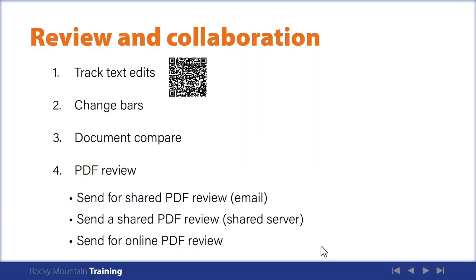Next up is a quick look at Document Compare. FrameMaker can compare two versions of a document to show you what has changed — not just text changes, but also footnotes, markers, anchored frames, text insets, variables, and cross-references. This is handy if you save your file before entering edits, save again after, and then compare the two to make sure you did everything you were supposed to do, and also ensure you didn't mess anything up.